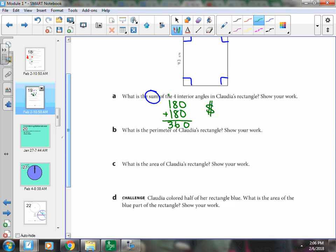When you get 360 degrees, the angles of a four-sided figure will equal 360 degrees. There we go.